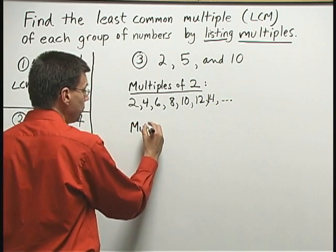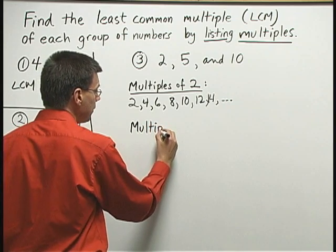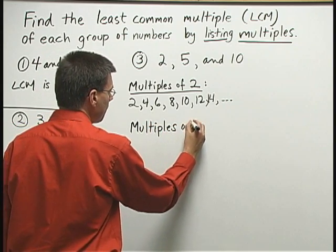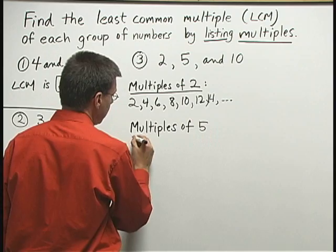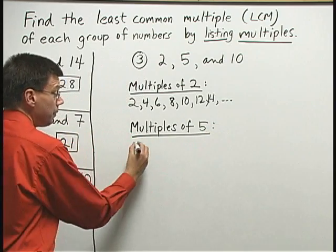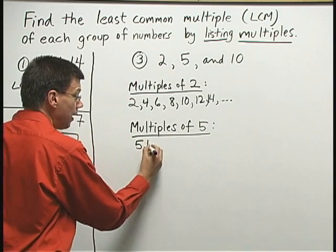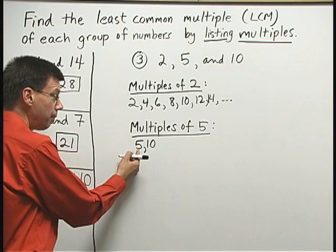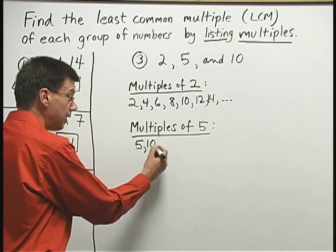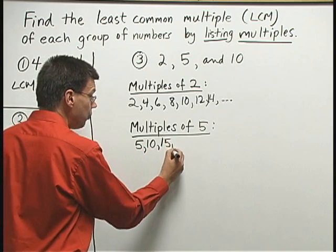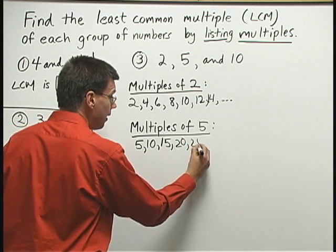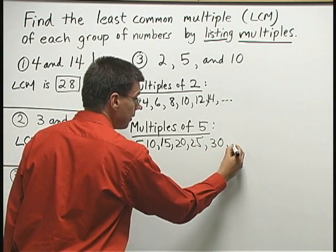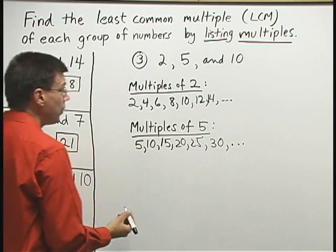Now I'll list some of the multiples of 5. 1 times 5 is 5, 2 times 5 is 10. The multiples of 5 are the numbers you get when you count by 5: 5, 10, 15, 20, 25, 30, so on and so forth.